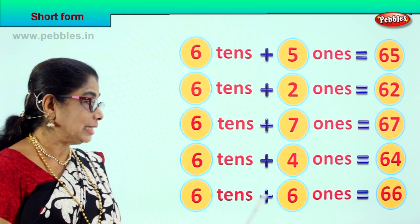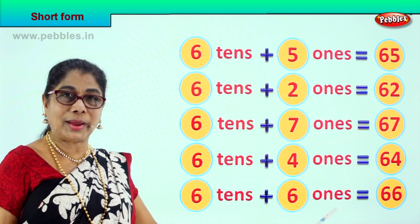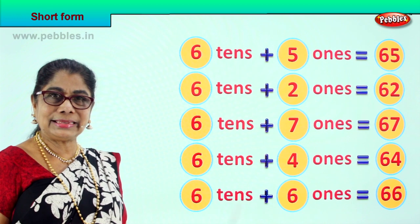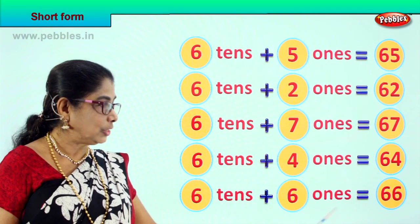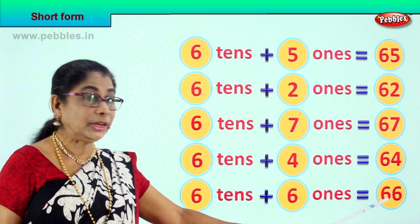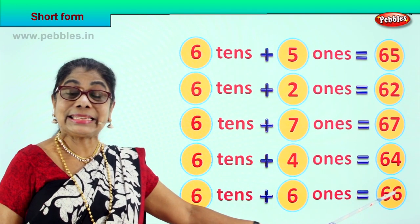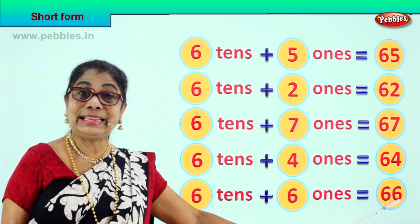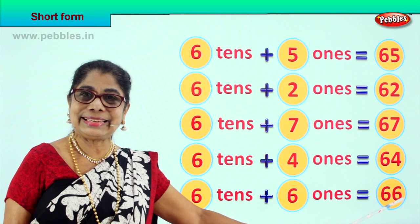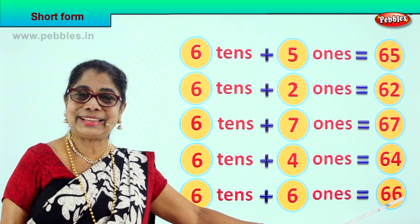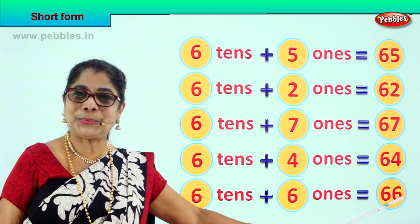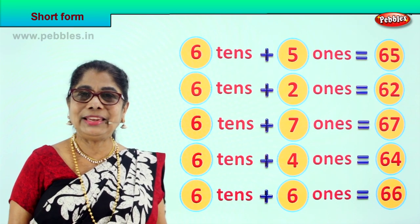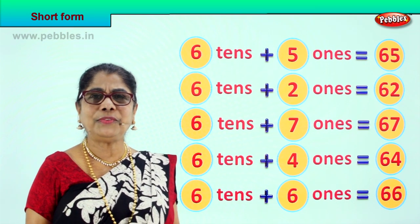And 6 tenths plus 6 ones? 6 tenths plus 6 ones is equal to? 6 and 6? 66. Good. Did you enjoy the short form?